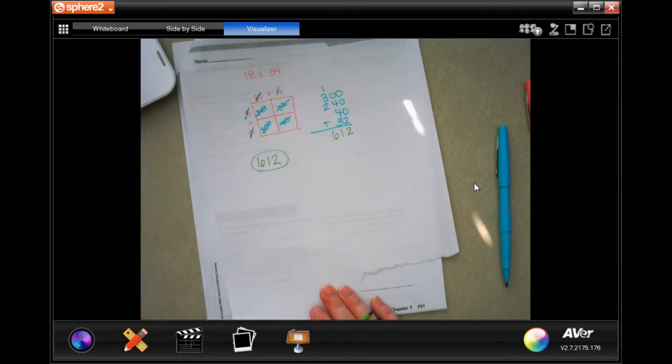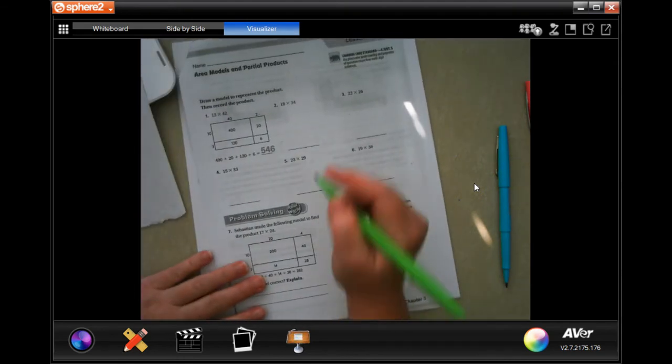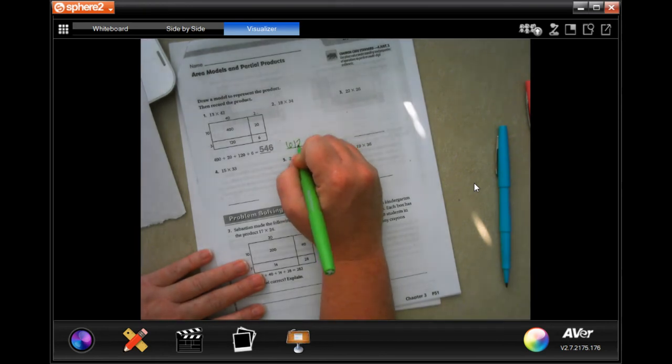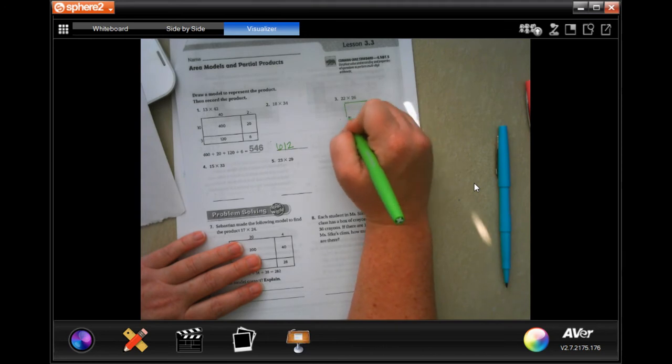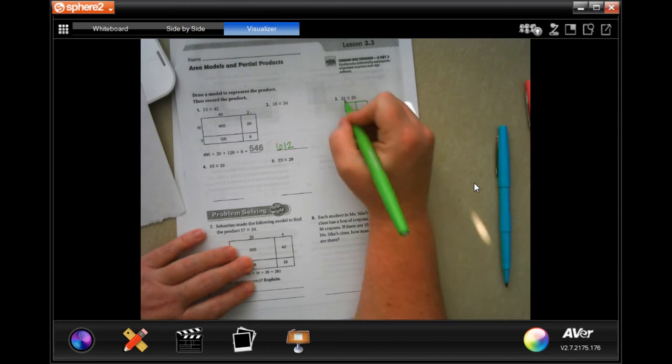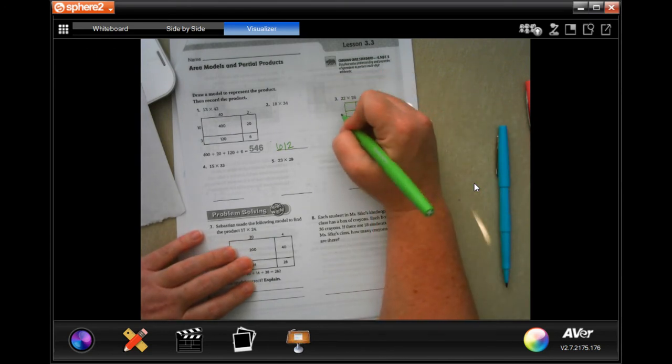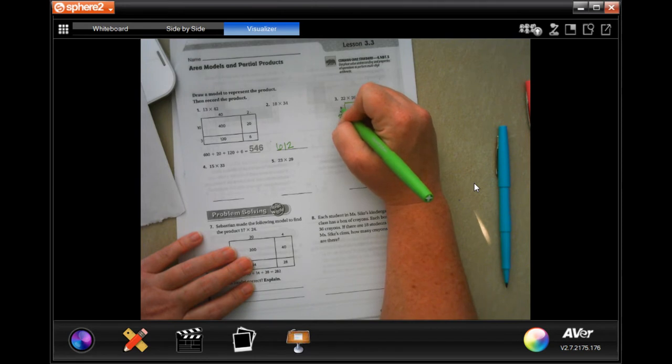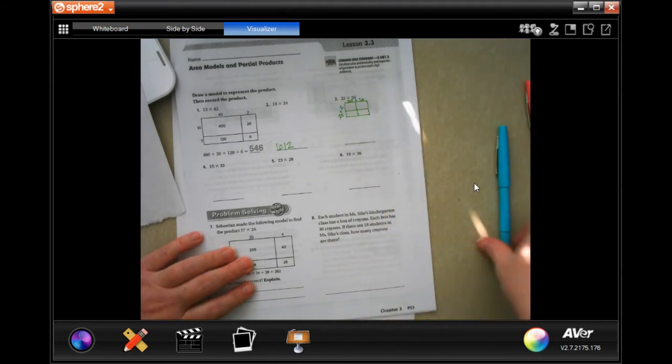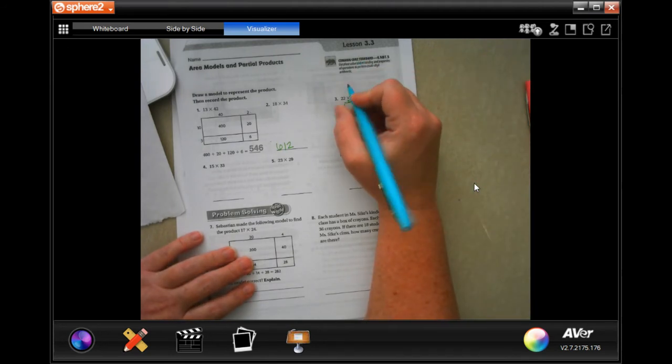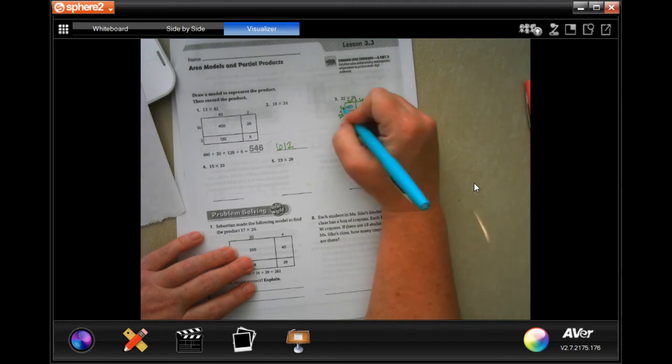I'm going to do it on the paper this time. We've got less room, but we're going to make it work. So 22 is 20 plus 2 and 26 is 20 plus 6. So now 2 times 20 is 40. 2 times 6 is 12. I'm done with my 2.